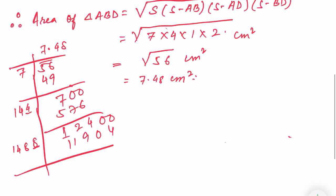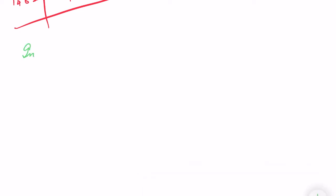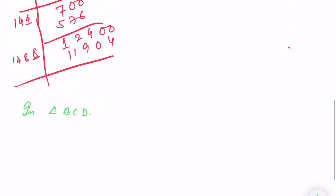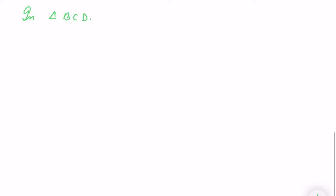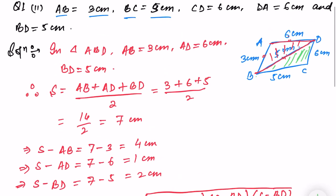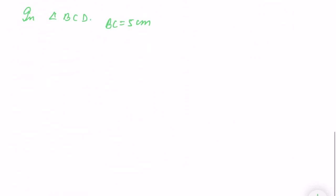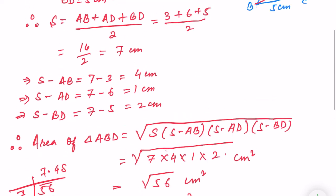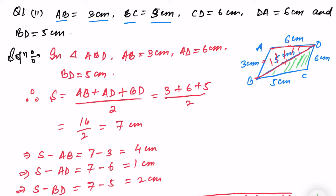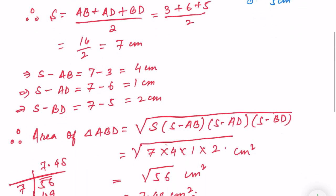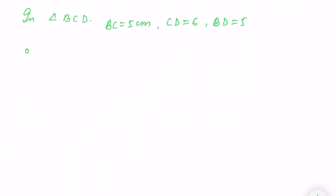Now we need to find the area of triangle BCD. In triangle BCD, BC is equal to 5 cm, CD is equal to 6 cm, and BD is equal to 5 cm. Therefore, S equals BC plus CD plus BD divided by 2, which is 5 plus 6 plus 5 divided by 2, equals 16 divided by 2, equals 8.